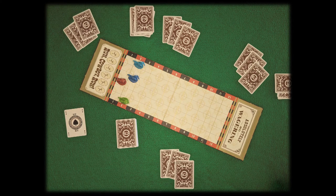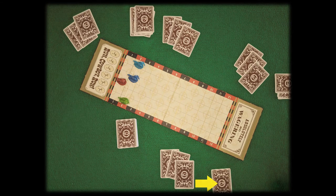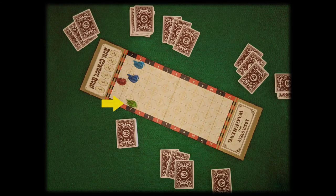Player number one doesn't have a playable card. Dealer gets to take the trick. He moves his cowboy one space.